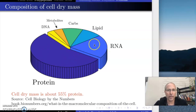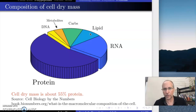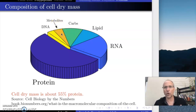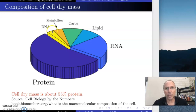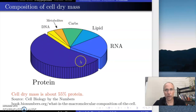Next is RNA — ribonucleic acid — which we're going to talk about very shortly. Lipids are molecules that do not go into solution in water — that includes fatty acids and cholesterols. Carbohydrates make another big chunk. Metabolites is a catch-all term for small organic molecules like amino acids, nucleotides, small sugars. And then the DNA — notice DNA is a small slice, actually the smallest slice of all. RNA is much bigger than DNA.